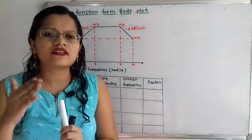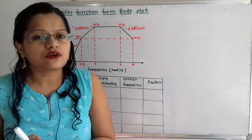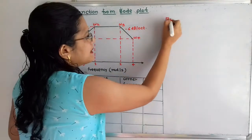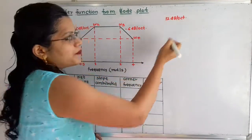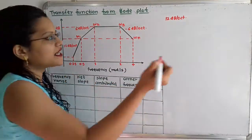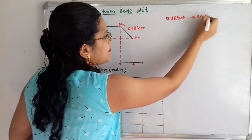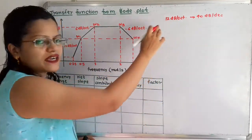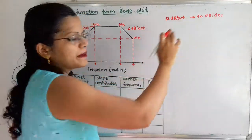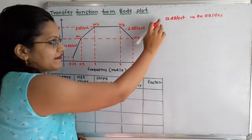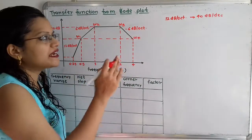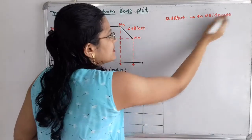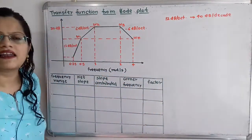So how can we convert this into decade? Whenever 12 dB per octave slope is given, it is equivalent to 40 dB per decade. So whenever there is a plus sign, that is plus 12 dB per octave, that means plus 40 dB per decade. Or whenever a minus sign is there, minus 12 dB per octave equals minus 40 dB per decade. These two terms are equivalent to each other.